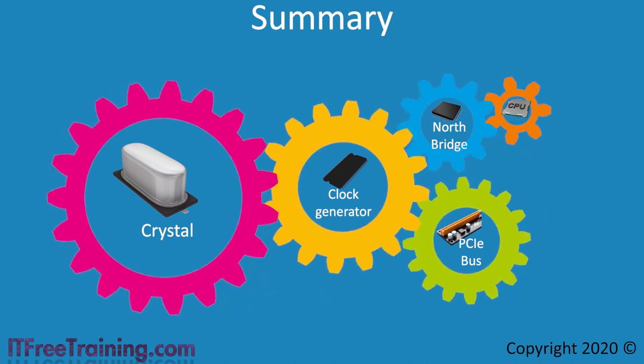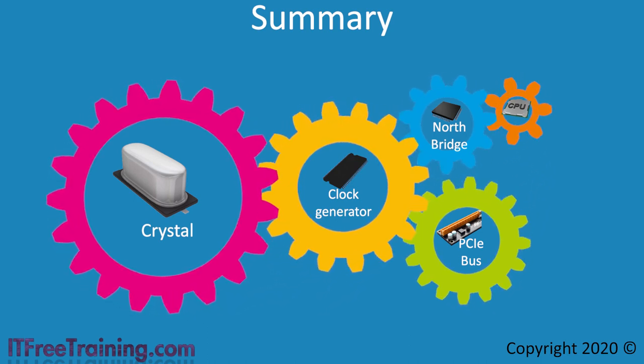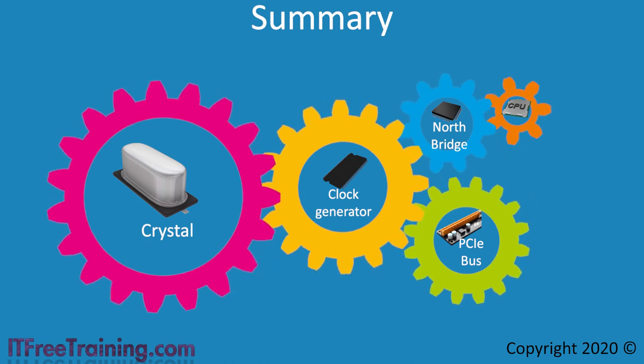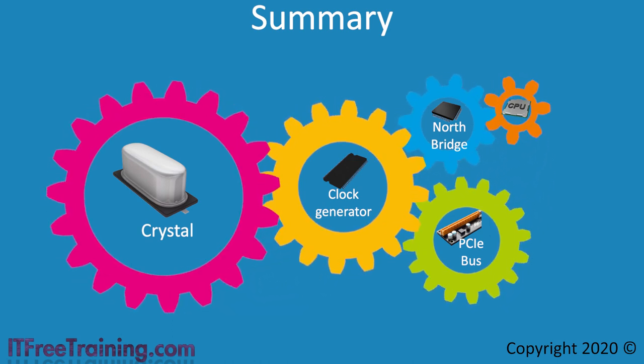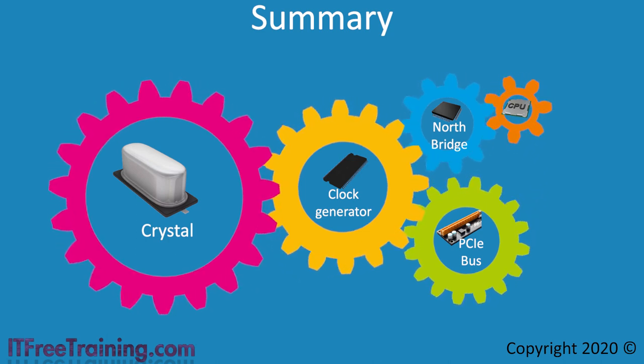Lastly, the CPU will generate its own clock rate as a multiple of the front side bus. This is done in the CPU due to the high speed that it operates at. If this clock rate was generated elsewhere, there would be timing and accuracy problems.